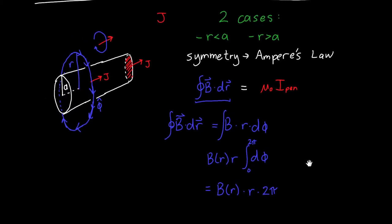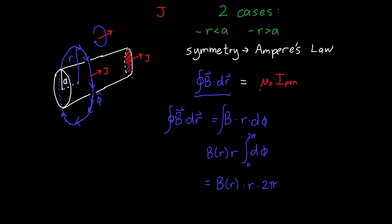Now what about this term on the right, this mu naught i-pen term? Well, first let's talk about the case for r greater than a. Now in this case, our loop is encompassing the entire cylinder, so it's capturing all of the cylinder's current. And so i-pen is just equal to the total current of the cylinder, or the current density j times the area of the cylinder, which is pi a squared.